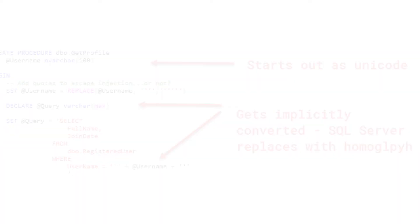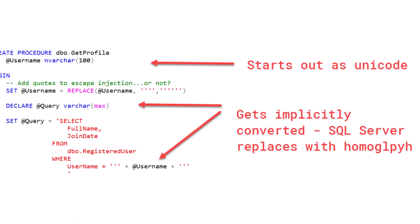The reason this happens is because we declared our query parameter as varchar. When we try to append our user parameter — which is Unicode — to our query parameter as varchar, SQL Server does an implicit conversion, which then converts our homoglyph apostrophe to a single quote.